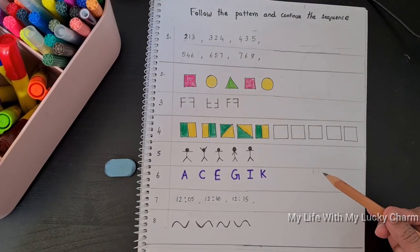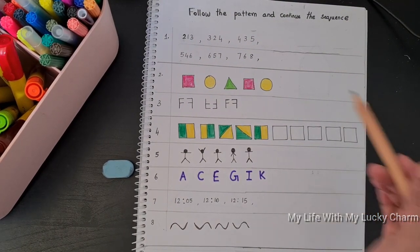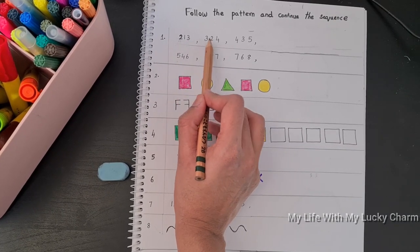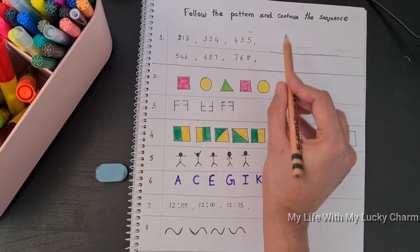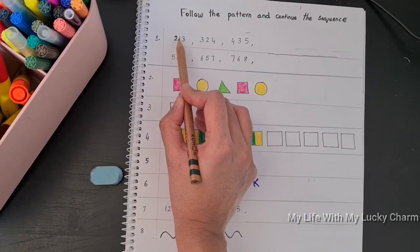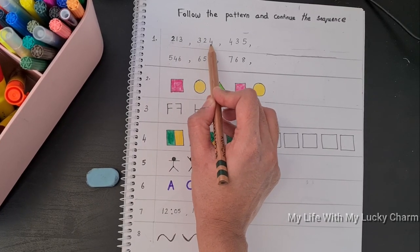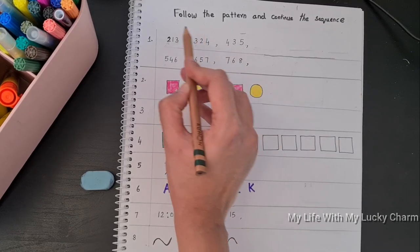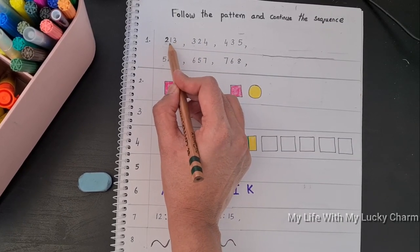For example, if we take this, he just needs to figure out how this sequence has been framed to find the answer. So for here, the number is 2, 1, 3, 3, 2, 4, 4, 3, 5. So on looking at it, the ending of the first set will be the beginning of the next set.